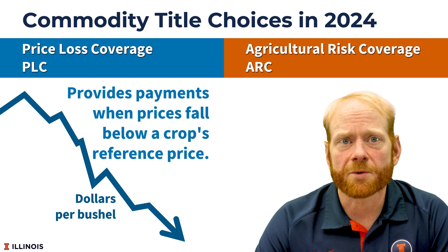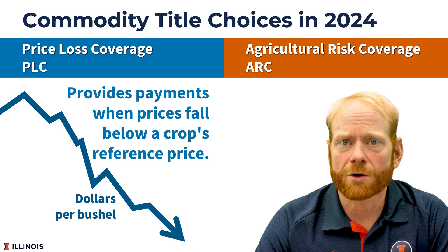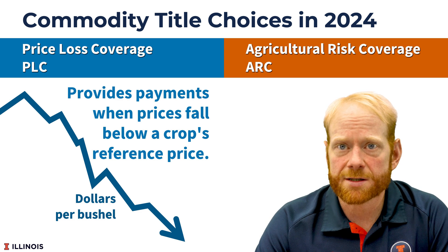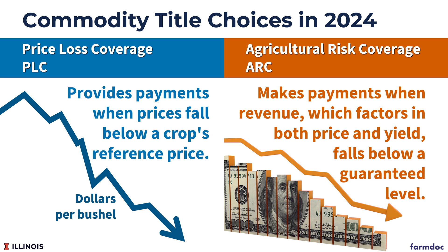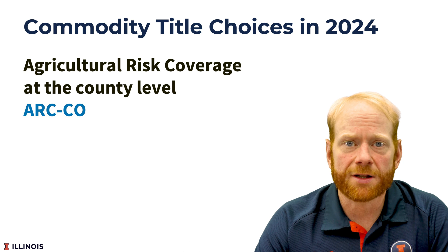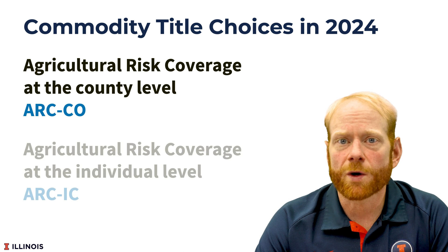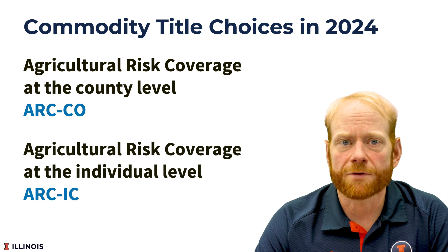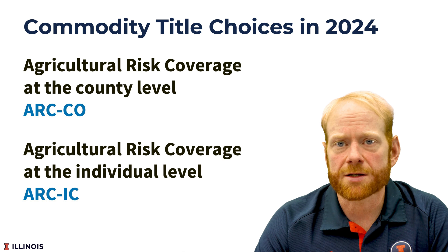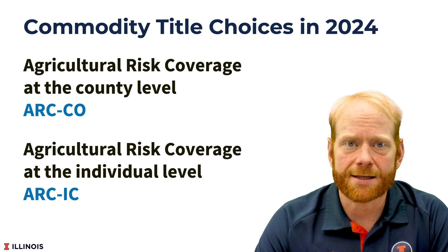PLC provides payments when prices fall below a crop's reference price. ARC makes payments when revenue, which factors in both price and yield, falls below a guaranteed level. ARC has a county-level option, which we refer to as ARC County, as well as an individual farm-level option, referred to as ARC Individual or ARC IC.